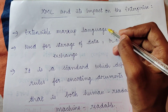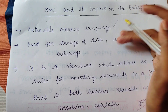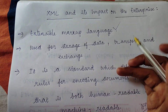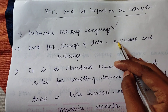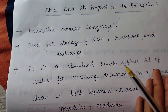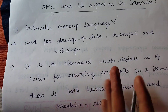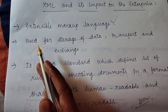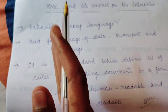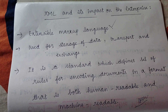Now let's understand the definition. XML is Extensible Markup Language. It is basically used for data storage, and it also transports and exchanges data. XML is a standard which defines a set of rules for encoding documents in a format that is both human readable and machine readable. So when data is sent from, say, the customer department to the sales team, it encodes the documents in a format readable by both humans and machines.